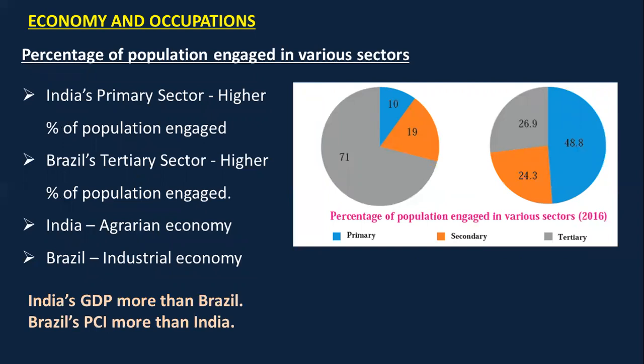Looking at the percentage of population engaged in each sector: India's primary sector has the highest population engaged at 48.8% — nearly 50% of our population is still doing agriculture — whereas in Brazil the tertiary sector has the highest percentage of population involved. That is why we say India is an agrarian economy. Although India's GDP is around two trillion dollars, Brazil's per capita income is more than India's because India's population is high but Brazil's population is low, increasing per capita income.